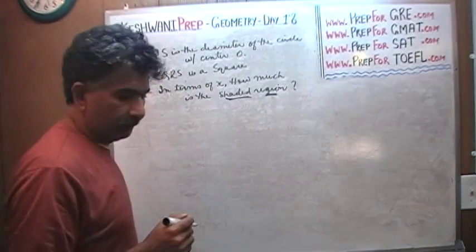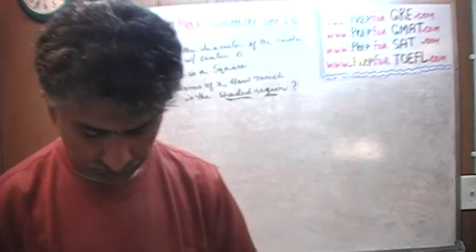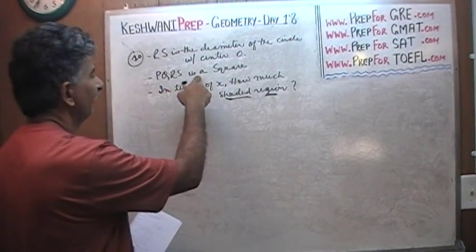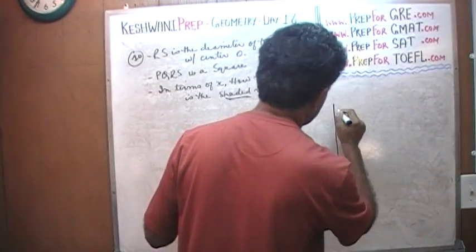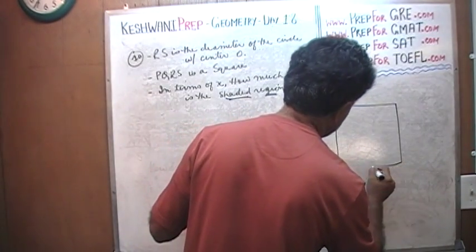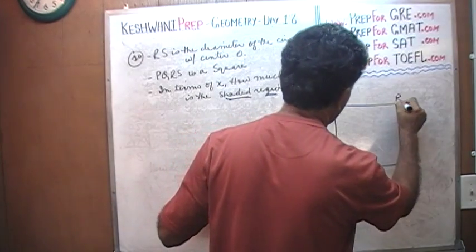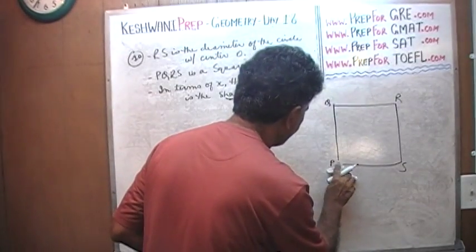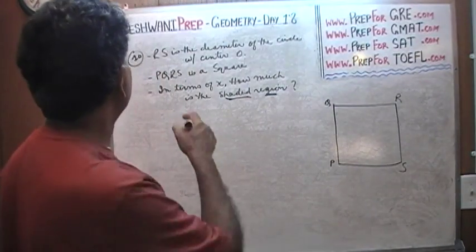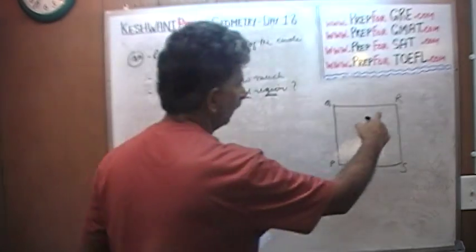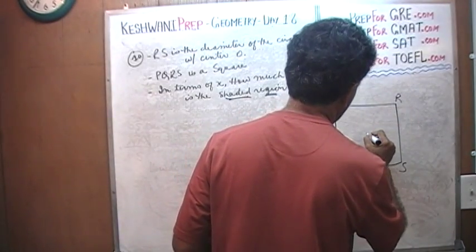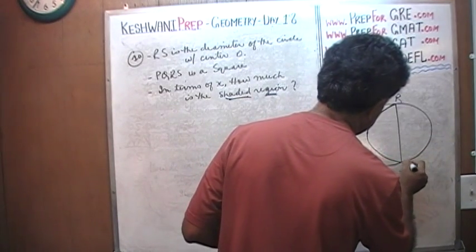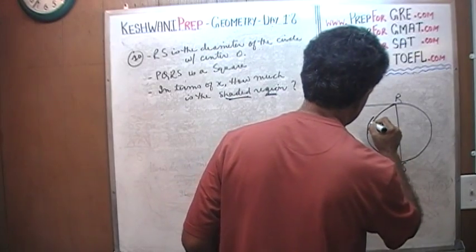The problem is already on the blackboard; what is missing is the picture, which I left out. So here we go. We have a square — PQRS is a square. Let's draw a square here. Apparently we also have a circle with the radius RS. R to S is a radius. The circle looks something like this.